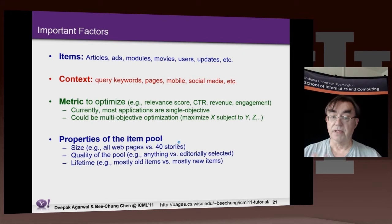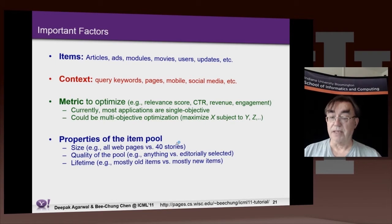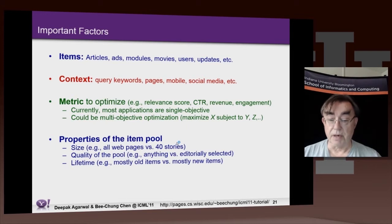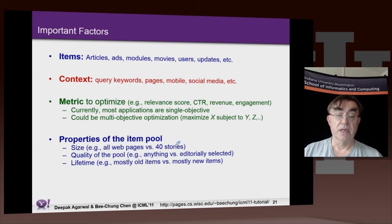We've discussed quite a lot the non-trivial metric to optimize. Then we have the item pool. In a query, we're searching all web pages. Maybe we only have 40 top stories, and we just have to choose the best four, and so on.